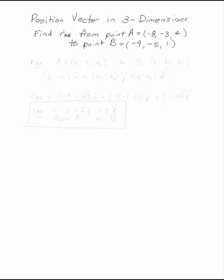Find the position vector r_AB from point A (-8, -3, 4) to point B (-9, -5, 1).